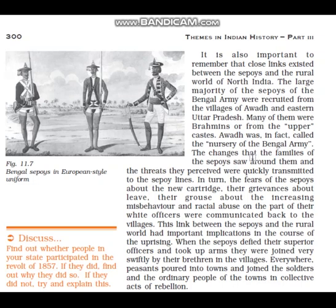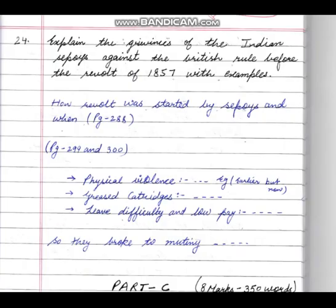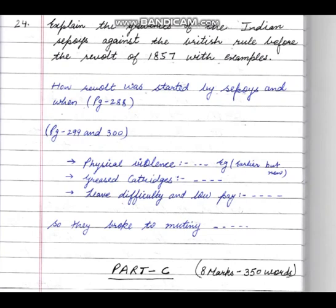Conclusion: 'They broke into mutiny and this mutiny was swiftly joined by ordinary people. For the first time, the Revolt of 1857 brought the British Raj onto its knees and threatened British rule.'